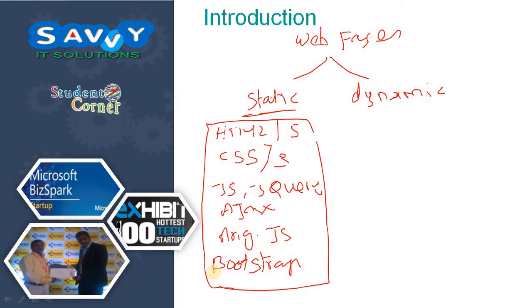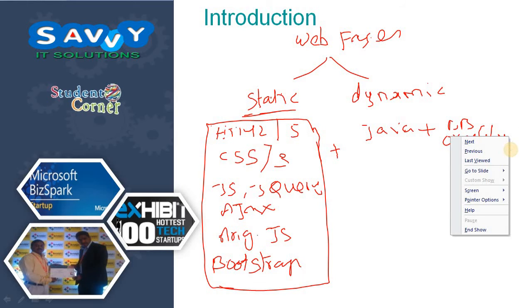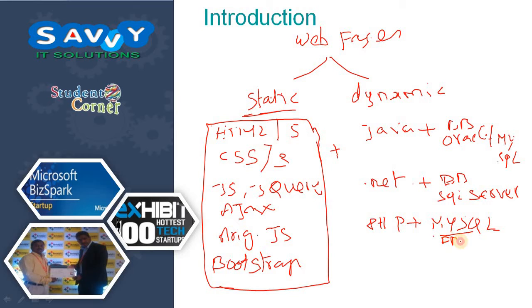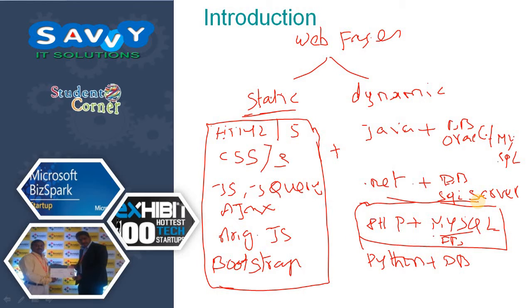When coming to dynamic websites, it includes static technologies plus a backend: Java with any database (preferably Oracle or MySQL), or .NET with any database (preferably SQL Server), or PHP with MySQL, or Python with any database. For our flexibility, we are going with PHP and MySQL in this series of videos.